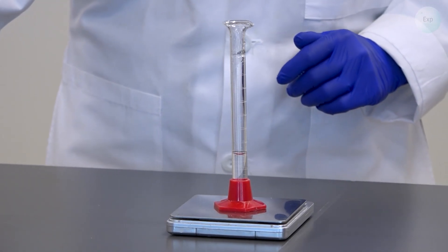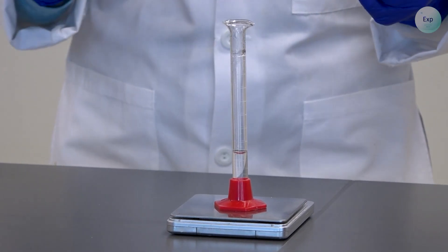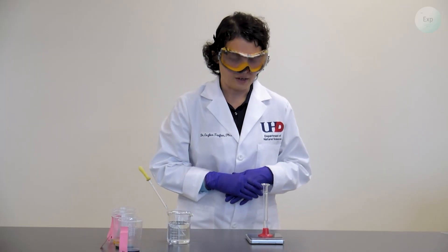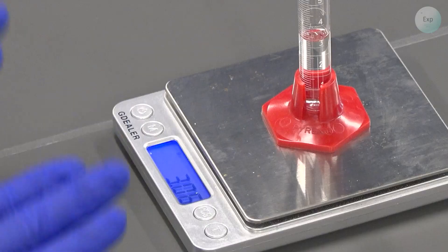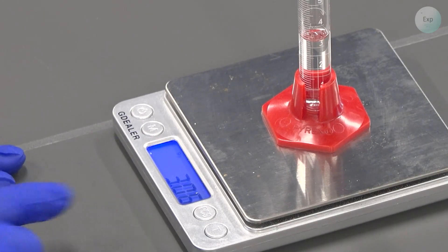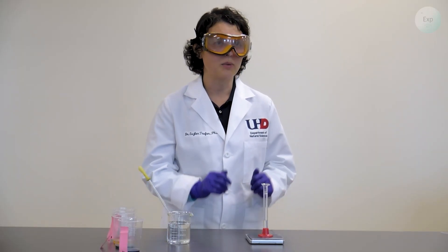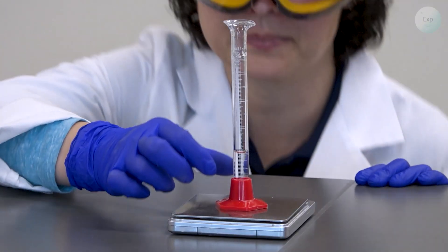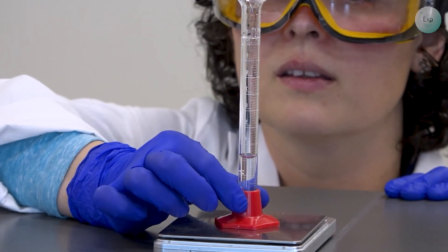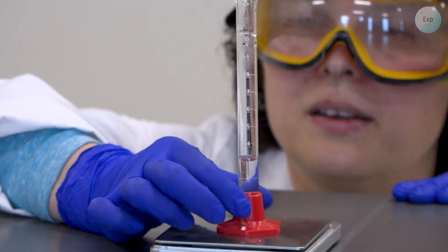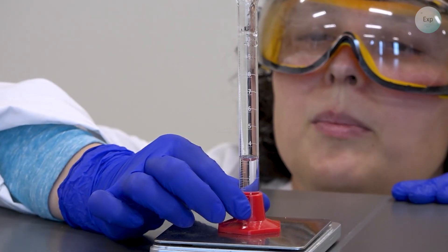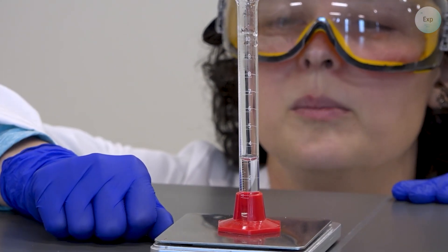For our first measurement, let's aim for a volume anywhere between 3 and 5 milliliters. So we record first the mass. For me, it is 3.06 grams. And then we lower ourselves down to eye level and record the volume of the same amount of water. And for me, that will be 3.08 milliliters.